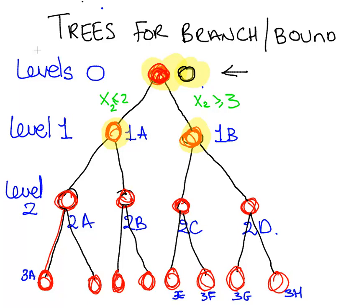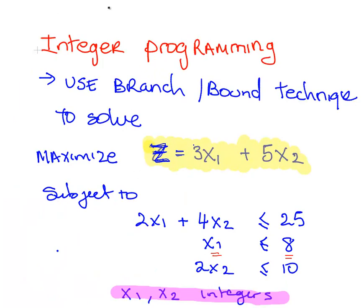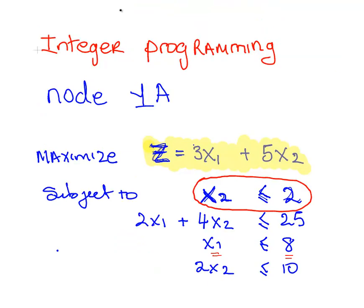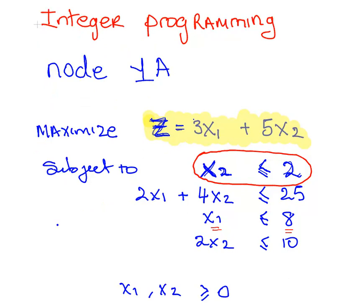Let's have a look at the updated problem. That's the original problem there. What we're going to do here is add in the new constraints. At node 1A, x2 has to be less than or equal to 2. Now if you just look at this bottom constraint, 2x2 has to be less than or equal to 10, that's now redundant. You can actually remove that from your constraints. The new constraint x2 less than or equal to 2 supersedes that.